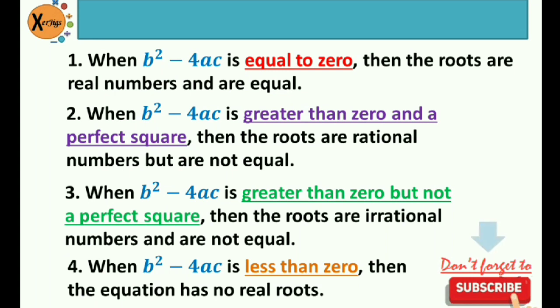Quick recap: by knowing the value of our discriminant, we can determine the nature of the roots of a quadratic equation. When b squared minus 4ac equals 0, roots are real and equal. If greater than 0 and a perfect square, roots are rational but not equal. If greater than 0 but not a perfect square, roots are irrational and not equal. And when less than 0, the equation has no real roots. Hopefully you learned something today — subscribe and click the notification bell for more updates.